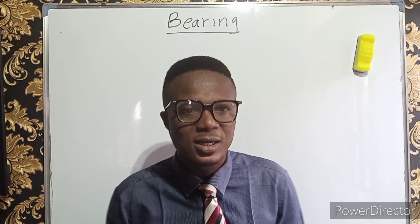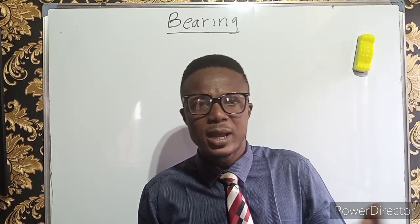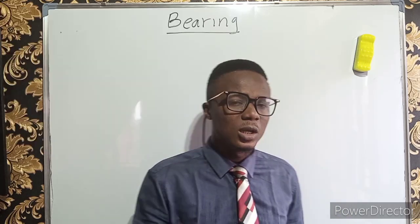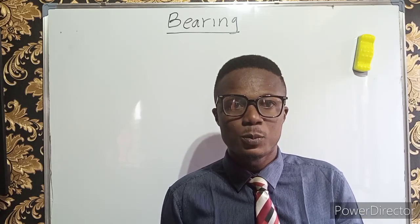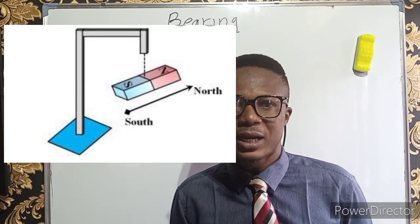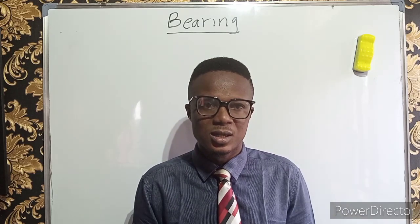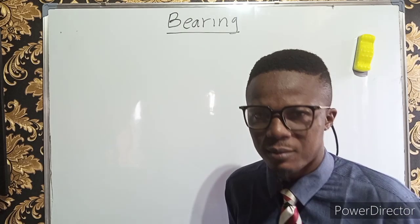Bearing is quite important in the sense that without it, traveling by air or by water would not be possible. The pilot in the air makes use of compass bearing to detect direction, likewise the captain at sea. The compass bearing always points towards the north, helping you to know your left and right by using the cardinal points: north, west, south, and east. These are the four basic cardinal points, and dividing them further gives us many other points.